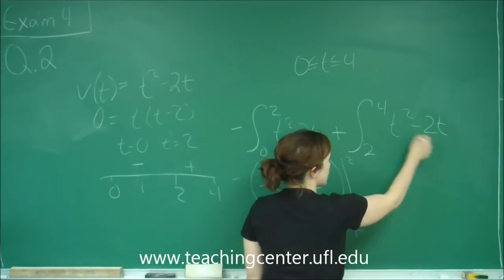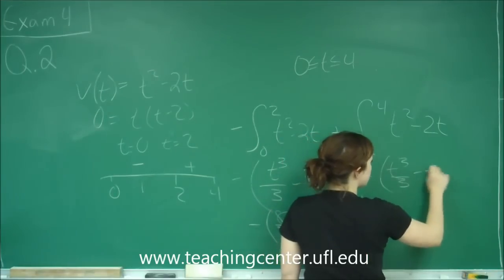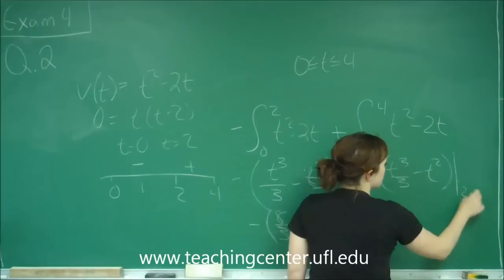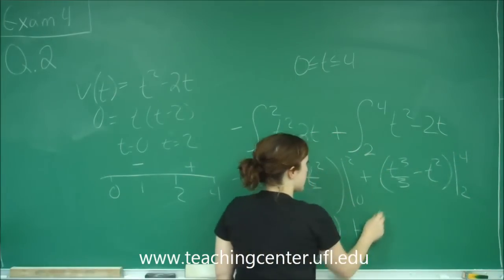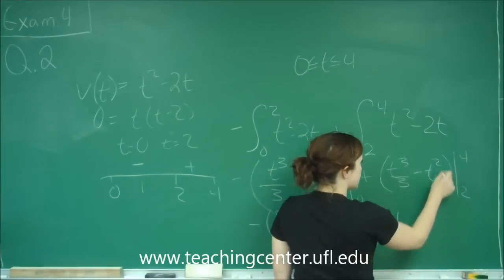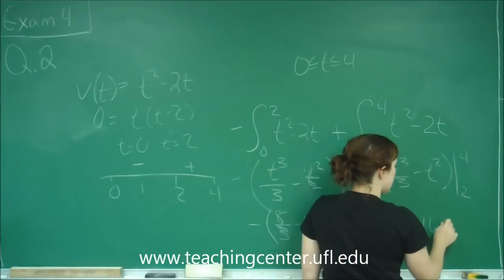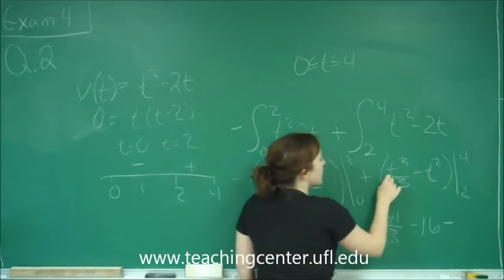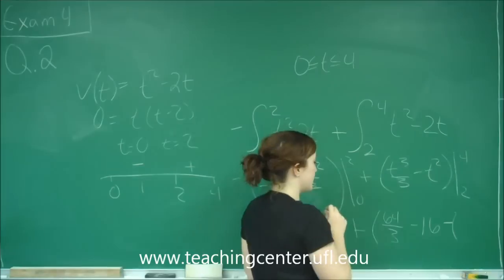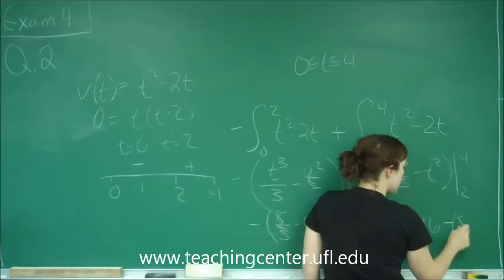Plus the integral for this is the same: t cubed over 3 minus t squared, evaluated from 2 to 4. When I plug in 4, I get 64 over 3 minus 4 squared is 16, minus, we'll put a little parenthesis there, 2, and there would be 8 thirds minus 4.